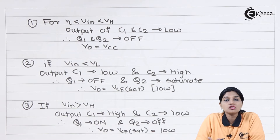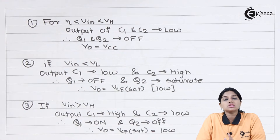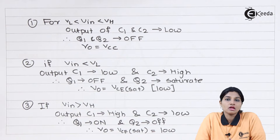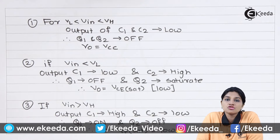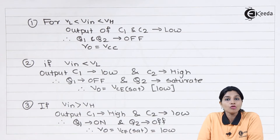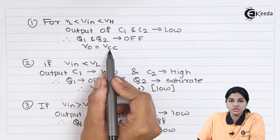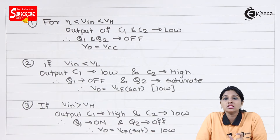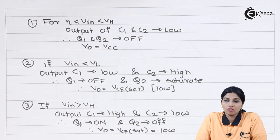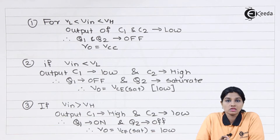The transistors Q1 and Q2 act as switches. When proper biasing is provided, the transistor can be used as a switch. So when the output of the comparator is low, both transistors will be in the off state and the output equals VCC, that means high. This indicates that when the input signal is within the window, between VH and VL, we get a high signal at the output.